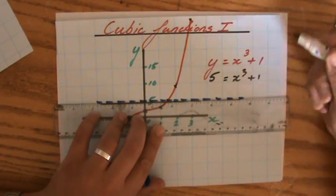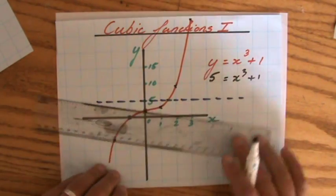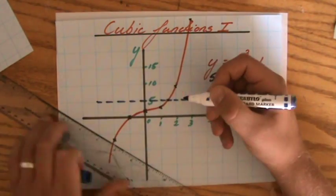You do that with a sharp pencil, a lot more accurate than I am doing right now. Anyway, that's the line y equals 5. And then I look at my graph, and I go down.